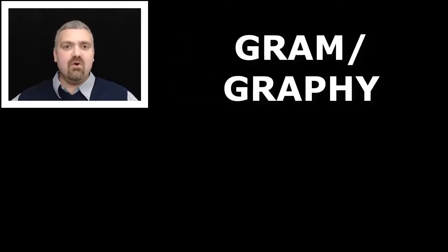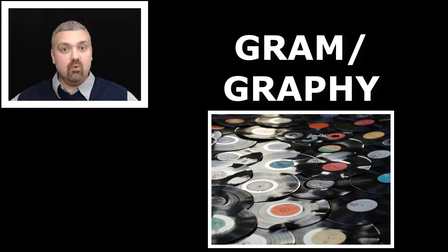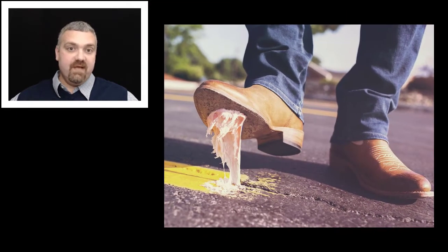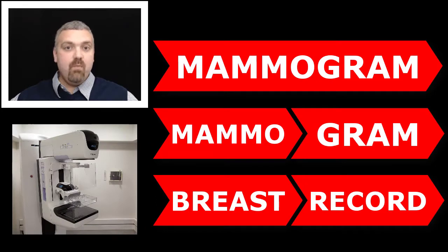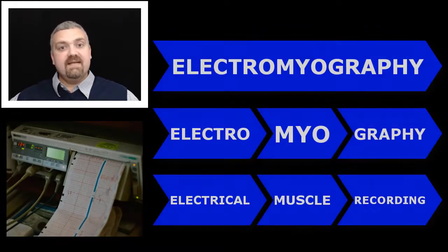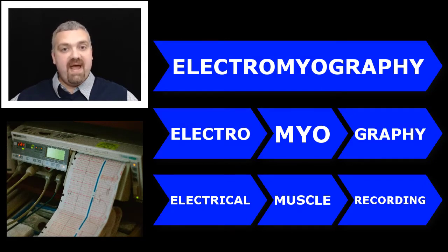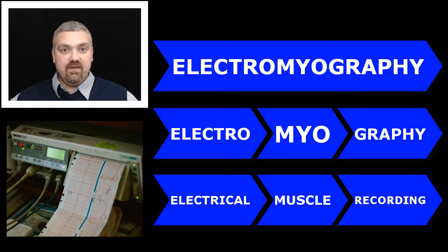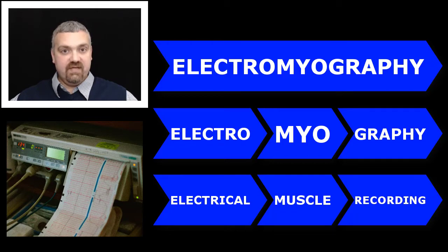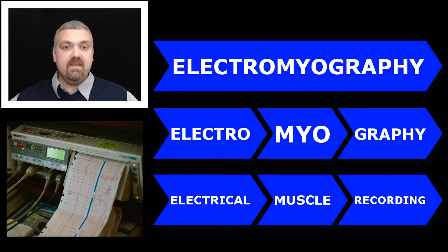Next we have gram or graphy, which means a record or recording. Think mammogram — mamo means breast, so a mammogram is a recording of your breast tissue looking for abnormal cell growth like breast cancer. Next, an EMG — electromyography — is a measurement of the electrical activity of your muscles. They actually run an electrical current through your muscles to determine how well your nerves in that area are functioning.